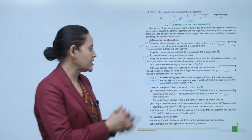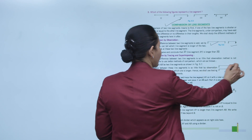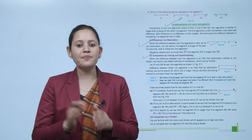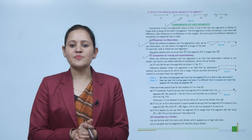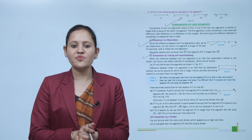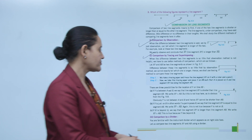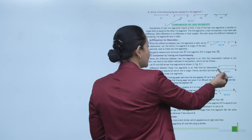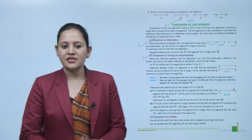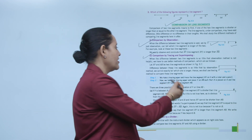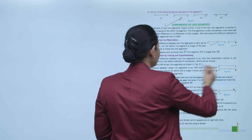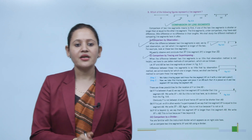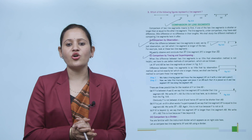We trace XY with the help of ruler and pencil. Then we take this tracing paper and place it on AB such that X is placed on A, and line segment XY lies along line segment AB. There are three possibilities for the location of Y on the line AB.